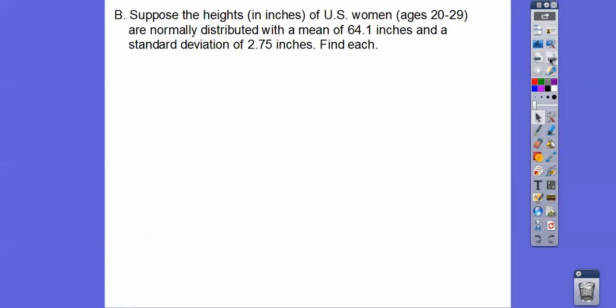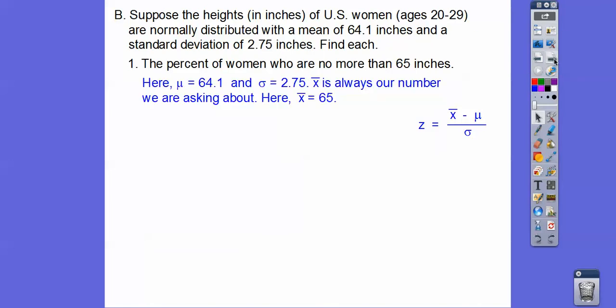So here we go. Suppose the height in inches of U.S. women ages 20 to 29 are normally distributed. And that's an important word right there, normally distributed. With this mean, this is my μ, my population mean, 64.1 inches and standard deviation of 2.75 inches. We're going to find each, the percent of women who are no more than 65 inches. So this is our x-bar, our sample mean right there. So we're going to plug in the 65 right here. We're going to plug in the population mean and then divide it by the population standard deviation.